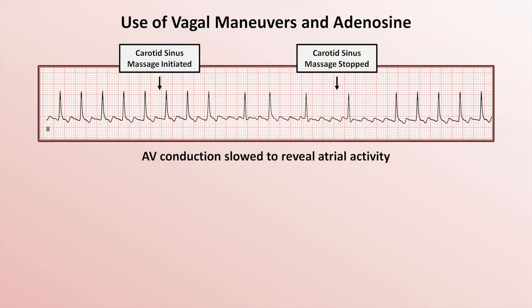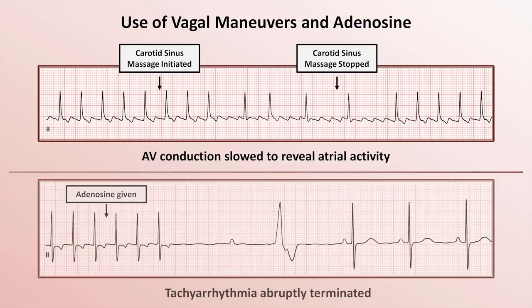In the first EKG example, a patient is in a narrow-complex tachyarrhythmia at a rate of 150. The treating physicians felt the EKG baseline had a sawtoothed appearance suggesting atrial flutter, but to confirm, several seconds of carotid sinus massage were performed, which very briefly increased AV block and decreased the frequency of QRS complexes to the point where the flutter waves were unambiguous. There is essentially no risk that carotid sinus massage will terminate atrial flutter, since the reentrant circuit responsible for flutter does not pass through the AV node.